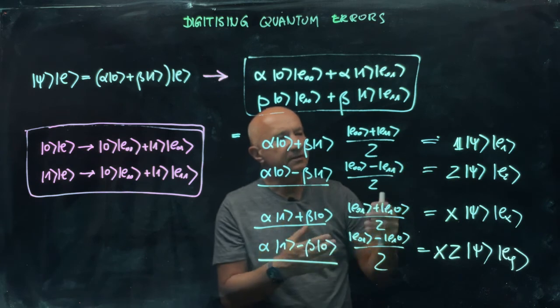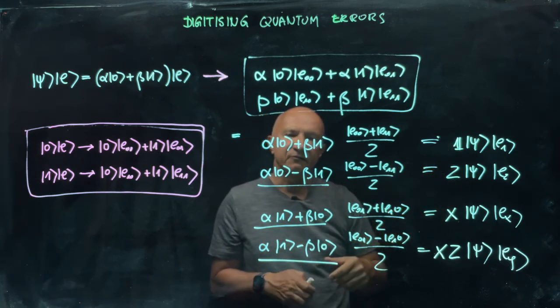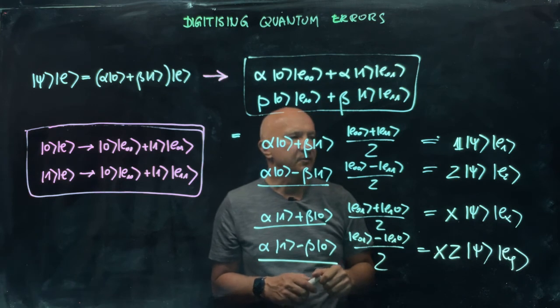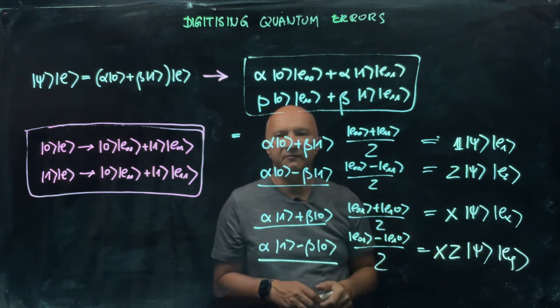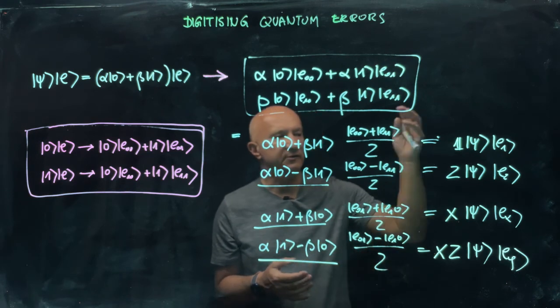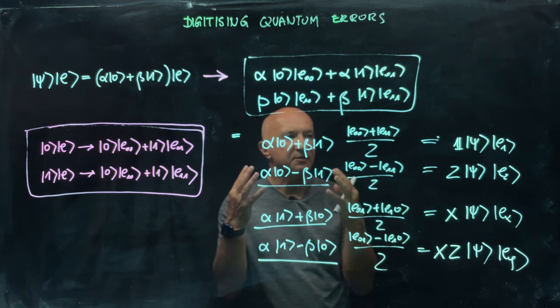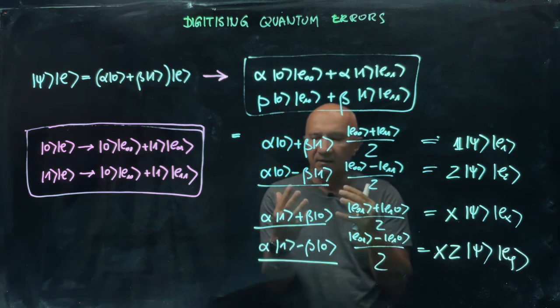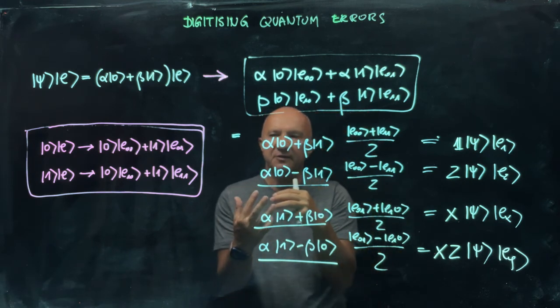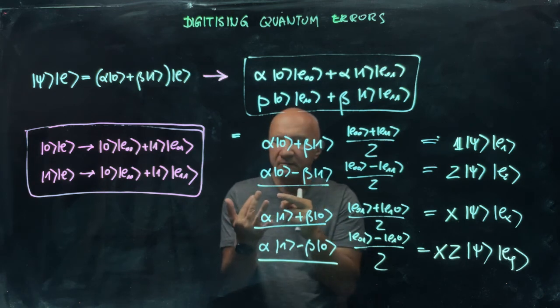Because as you'll see in a moment, we can always choose a set of errors which will be such that the states of the environment will be orthogonal to each other or form even an orthonormal basis. But the important thing is to realize that the effect of the environment on the qubit can be understood in terms of bit flip errors and phase flip errors.